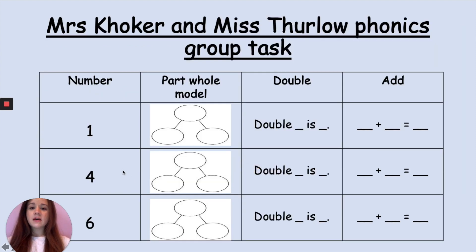Now if you are in Mrs. Coker and Miss Thurlow's phonics groups here is your activity for today. So we are just going to be doubling some numbers. We have the numbers 1, 4, and 6. Can you show them doubled in your part-whole model, so remember your parts will be the same and then you add them together to make your whole.